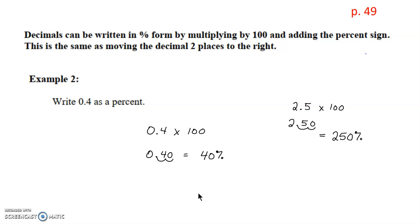Even though in math class you're not used to seeing percentages greater than 100%, when we talk about things in life that show growth, you can have growth higher than 100% — for example, financial growth. A quick example: if you bought a car for $1,000 but sold it for $2,500, you would be seeing a 250% increase in the price of that car.